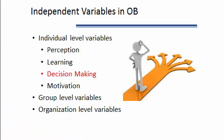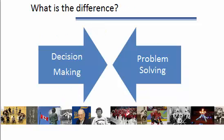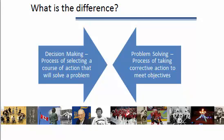Let's go back to these individual level variables and revisit decision-making. In first year, we distinguished between decision-making and problem-solving. We differentiated the two by saying that decision-making is the process of selecting a course of action that will solve a problem, and problem-solving, in turn, is the process of taking corrective action to meet objectives. Note that with decision-making, the emphasis is very much on selecting the course of action, where with problem-solving, the emphasis is on taking that corrective action.